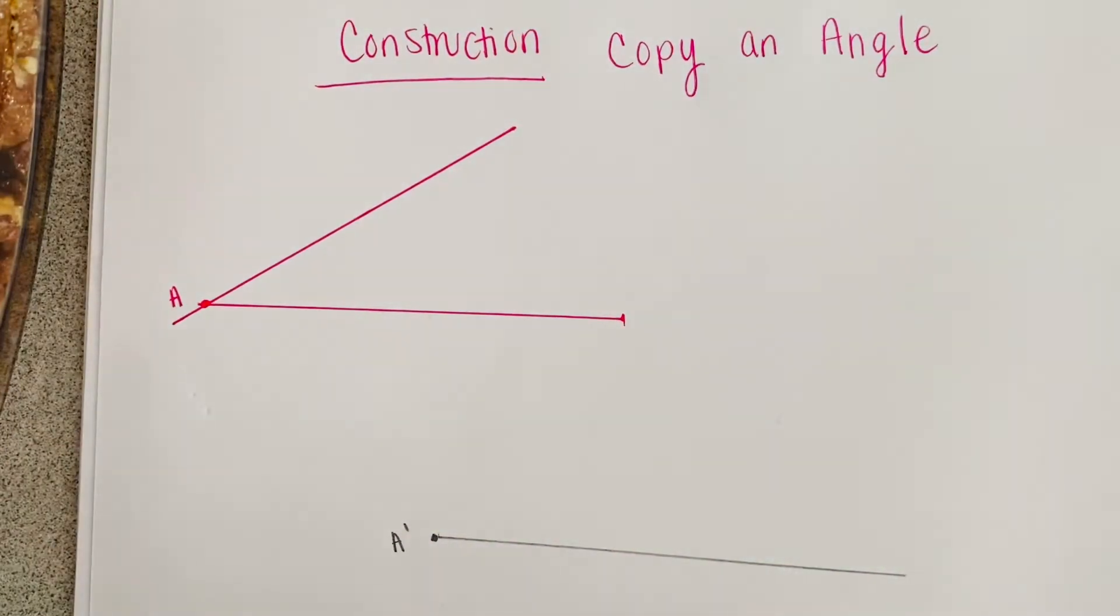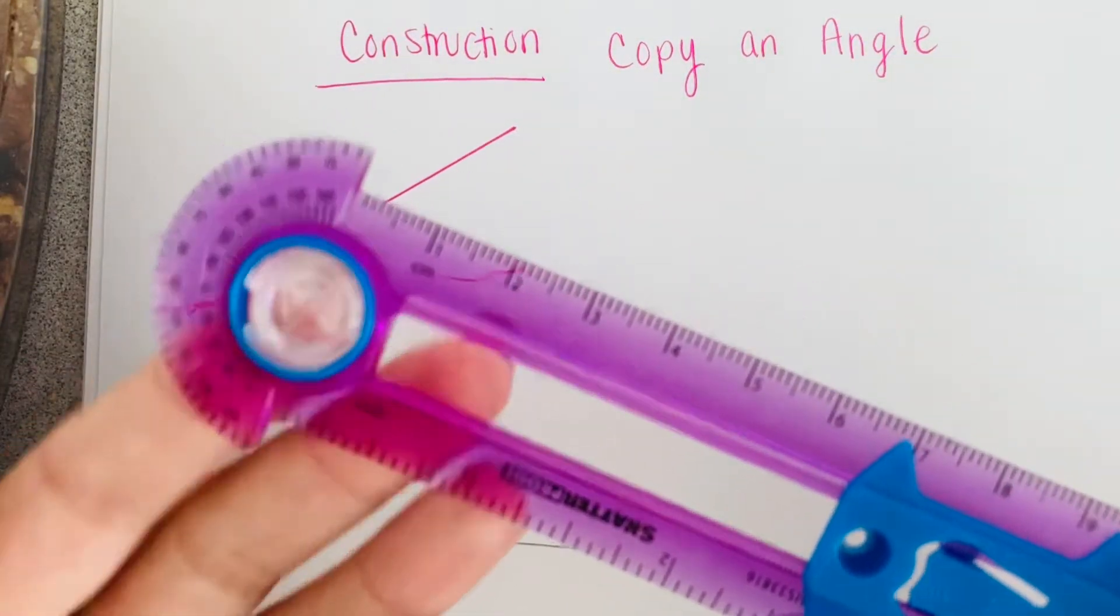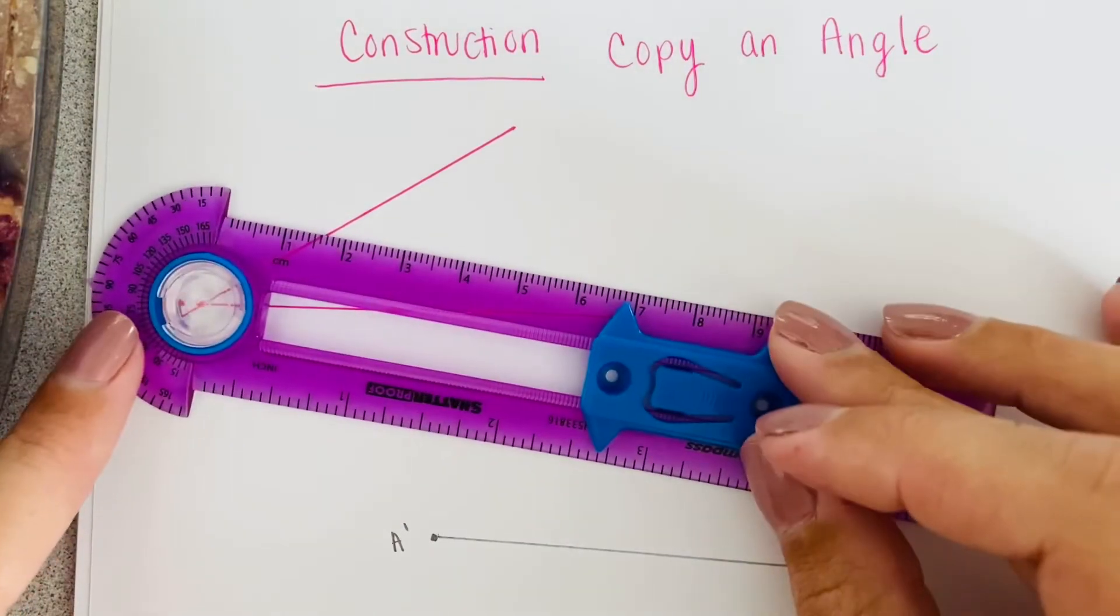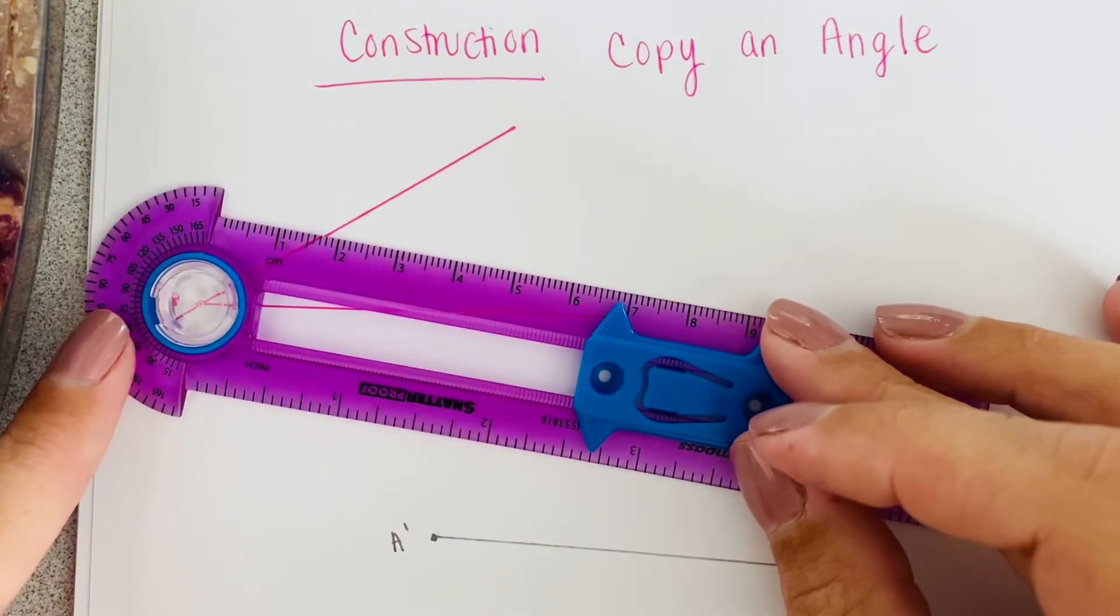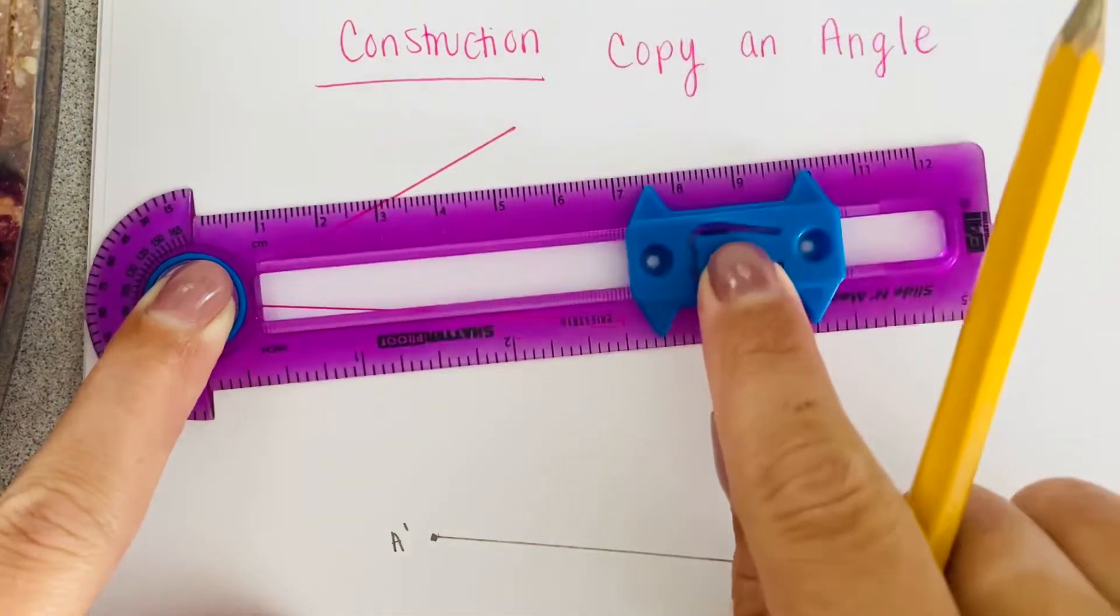Okay, so once you have that, we are going to put the eye of our compass on our original A. Make sure it's perfect and I'm going to open it just slightly. I don't want it over my angle. That wouldn't make sense.